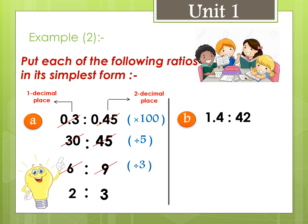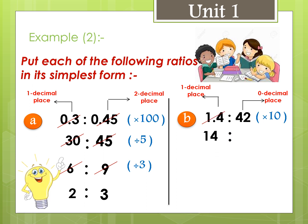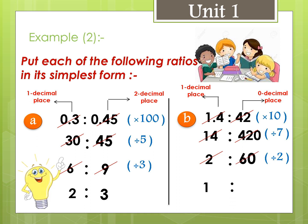Letter b: 1.4 to 42. Since 1.4 has one decimal place and 42 is a whole number, we multiply both by 10: 1.4 times 10 equals 14, and 42 times 10 equals 420. Since 14 and 420 are divisible by 7: 14 divided by 7 equals 2, and 420 divided by 7 equals 60. Since 2 and 60 are both even numbers, divide by 2: 2 divided by 2 equals 1, and 60 divided by 2 equals 30. The ratio is 1 to 30.